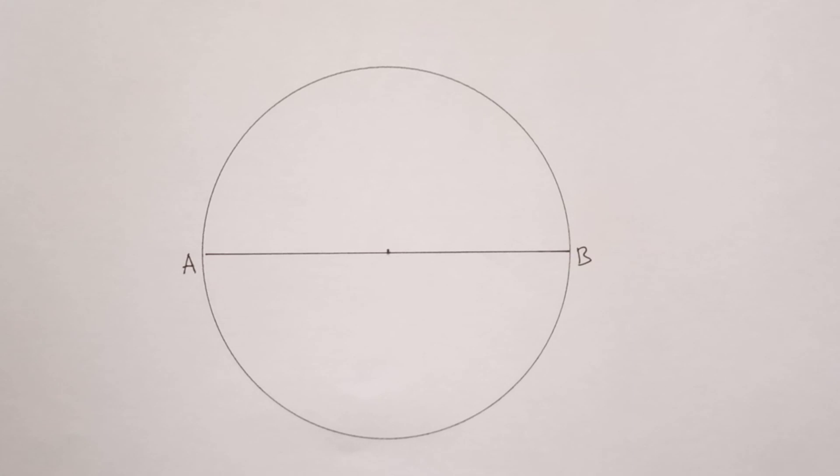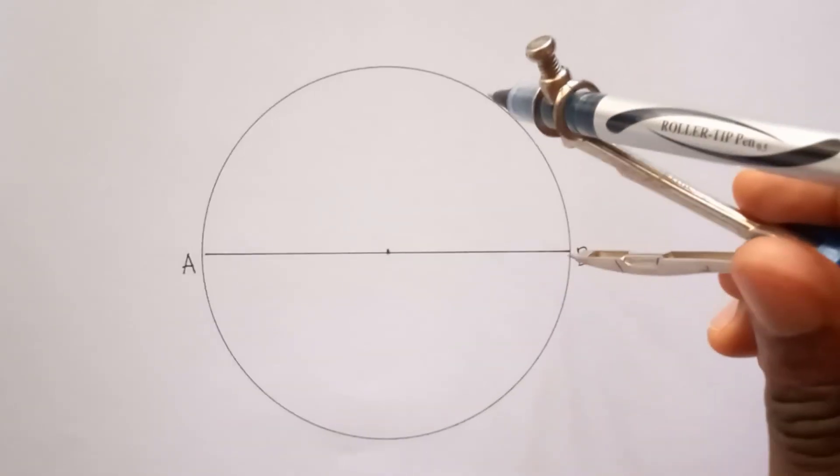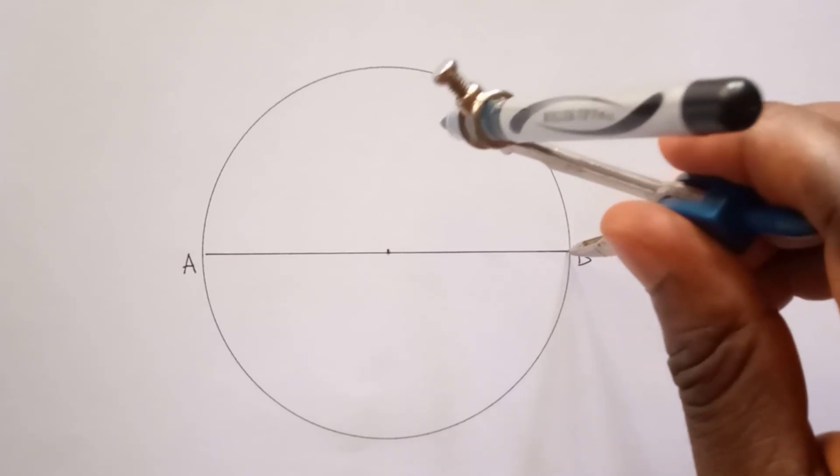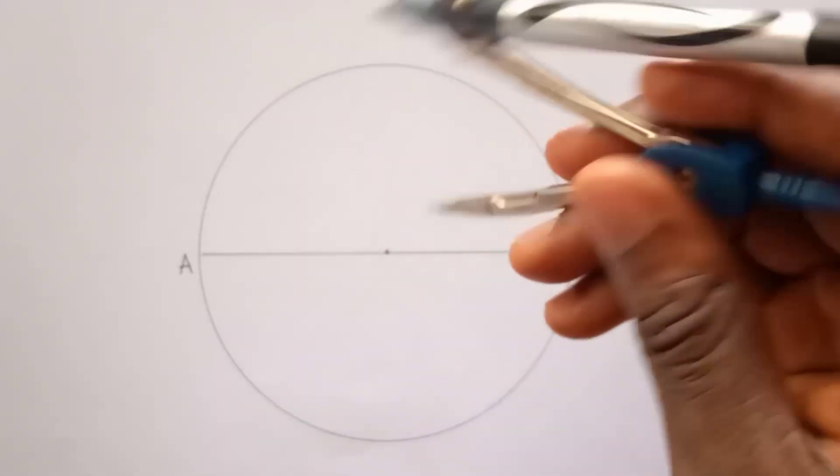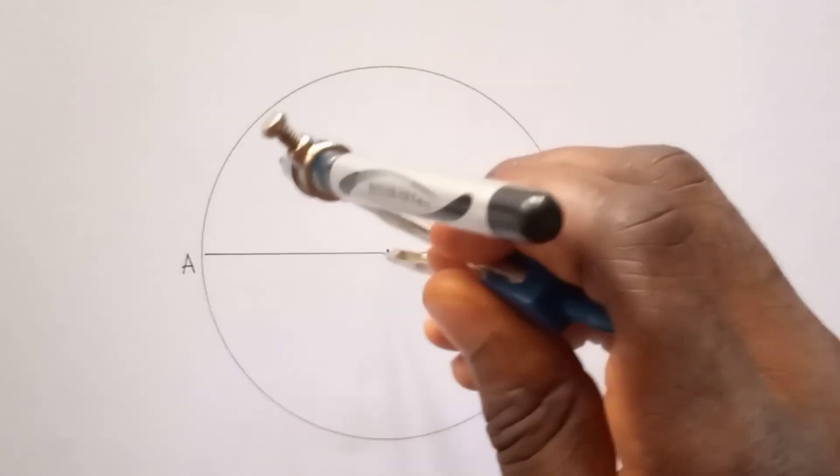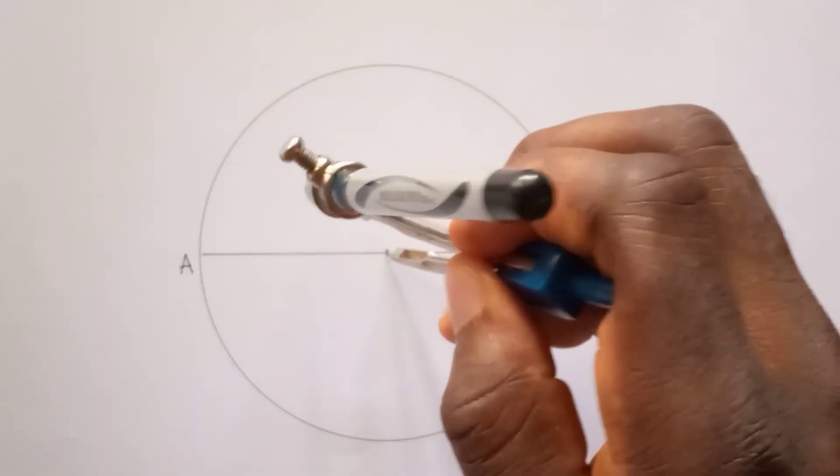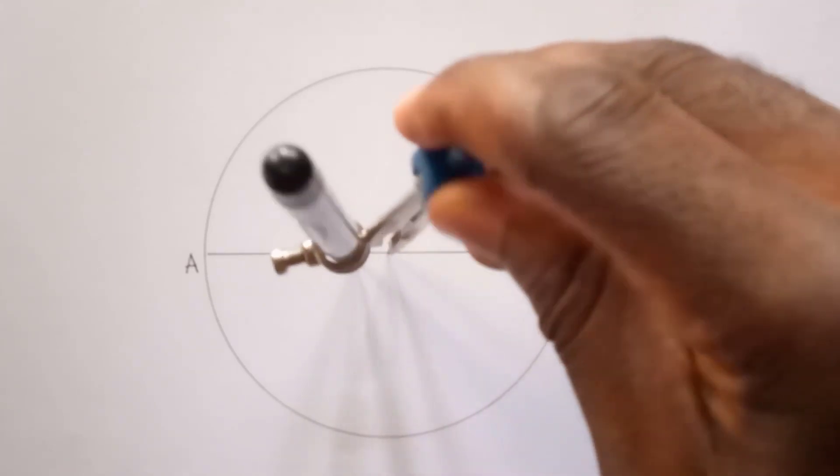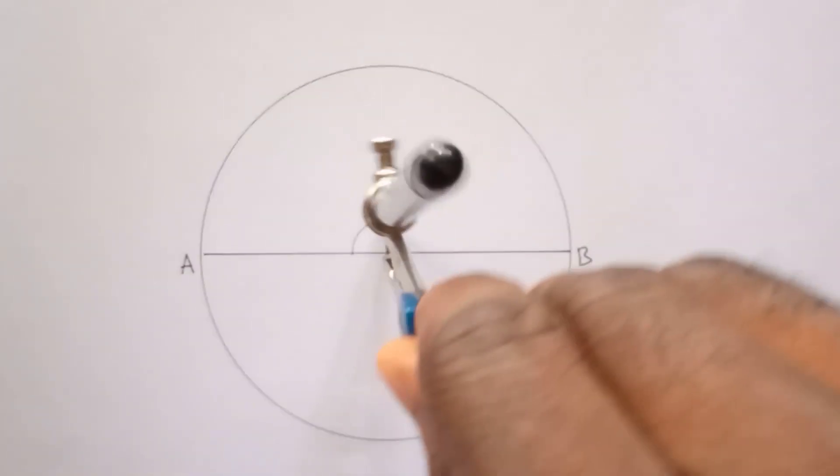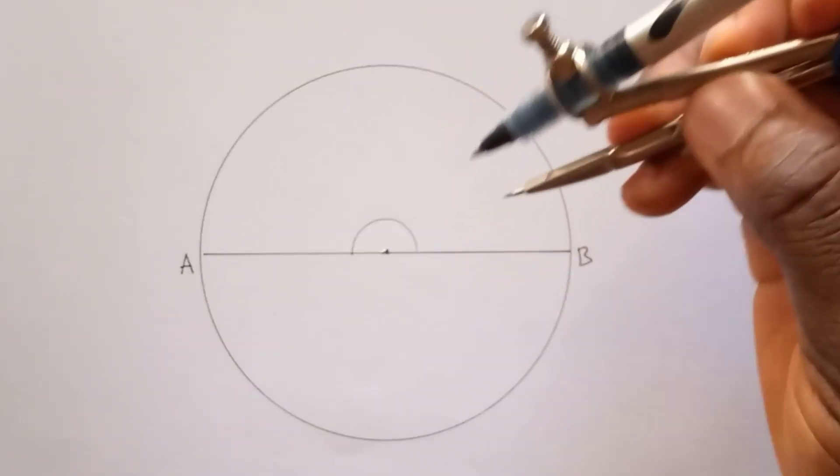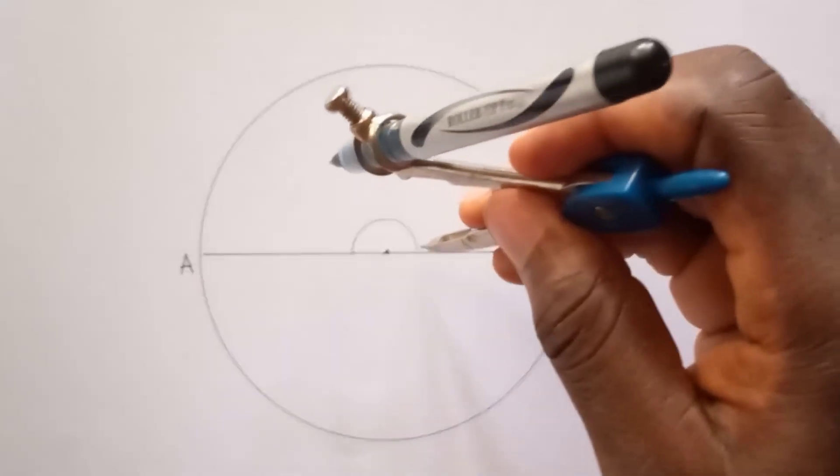Now at this point, this is your circle, this is your center. You can now bisect the center as well and construct a perpendicular.